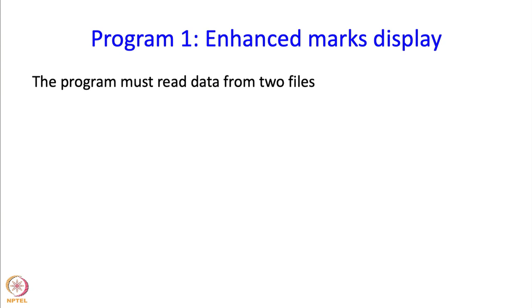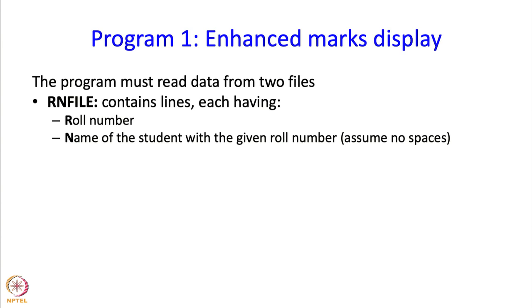In this case the program is expected to read data from two files. The first file, which I am going to call RN file, contains lines each having the following: first on each line there is the roll number and then there is the name of the student with the given roll number. For simplicity we are going to assume that the name does not contain any spaces, but in real life we would have to handle names with spaces as well.